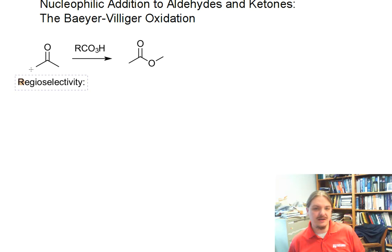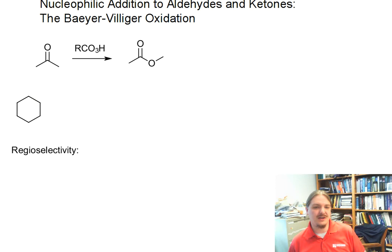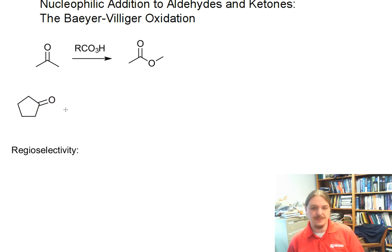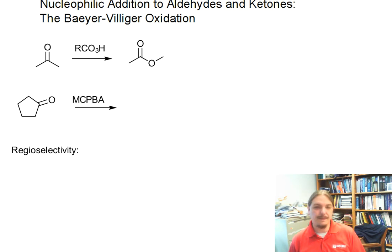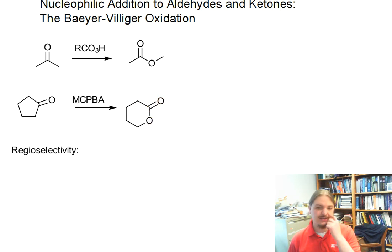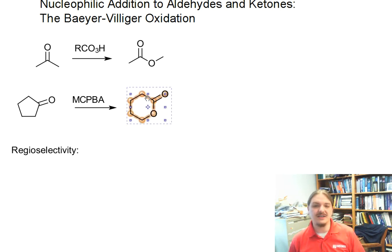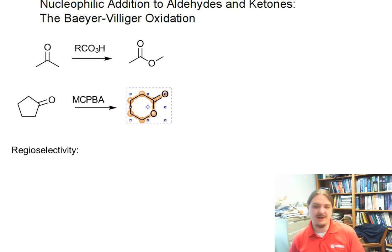This reaction can be done on all kinds of aldehydes and ketones. One really cool example: if you do this reaction on a cyclic ketone using MCPBA or your other favorite peroxy acid, you get what amounts to a ring expansion, as oxygen is inserted on one side, giving you cyclic esters which can then be opened up or used for other purposes.